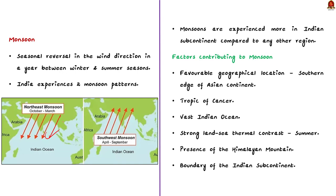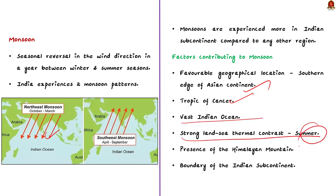Factors contributing to monsoons in the Indian subcontinent include: favorable geographical location at the southern edge of the Asian continent; the Tropic of Cancer passing through the Indian subcontinent; the vast Indian Ocean lying south of the subcontinent; strong land-sea thermal contrast especially during summer; and the presence of the Himalayan mountain barrier along the northern boundary of the Indian subcontinent.